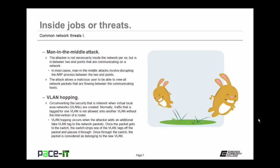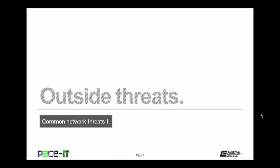Then there's VLAN hopping. This is circumventing the security that is inherent when virtual local area networks are created. Normally, traffic tagged for one VLAN is not allowed onto another VLAN without the intervention of a router. VLAN hopping occurs when the attacker adds an additional fake VLAN tag to the network packets. Once the packets get to the switch, the switch strips one of the VLAN tags off the packet and then passes it through. Once through the switch, the packet is considered as belonging to the new VLAN, thus bypassing the security inherent in VLANs.